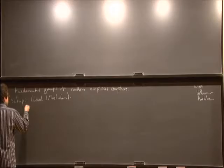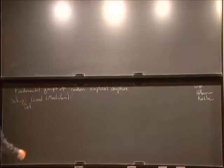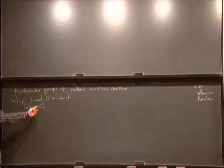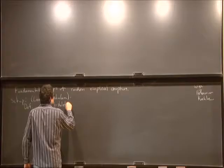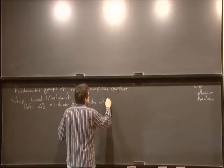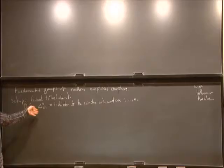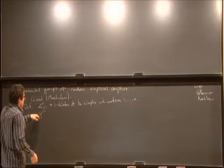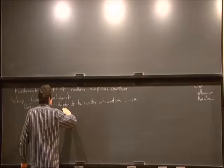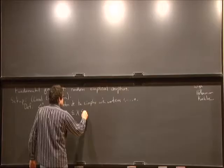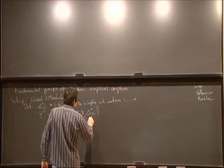That's quite a natural way to build a random space. You just start with the simplex — I'll take Δ_N^i to mean the i-skeleton of the simplex on the set {1, ..., N}. Then I'm going to look at two-dimensional subcomplexes of this that contain all the edges. So my sigma algebra Y_N will just be the set of subcomplexes that contain the full 1-skeleton.